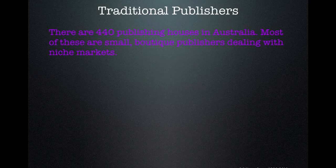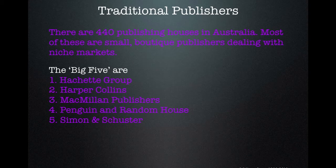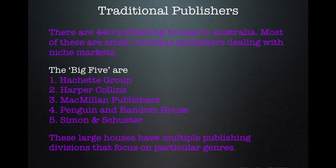There are apparently something like 440 publishing houses in Australia, most being small boutique publishers dealing with niche markets. The big five that everyone is aware of are Hachette Group, HarperCollins, Macmillan Publishers, Penguin Random House — it used to be the big six before they combined — and Simon and Schuster. These large houses have multiple publishing divisions that focus on particular genres, so you might find a different name inside a book that turns out to be a division of one of those big five.